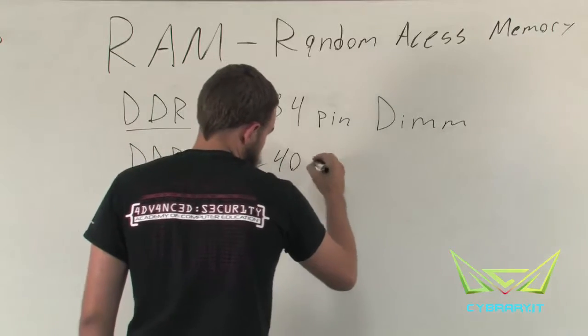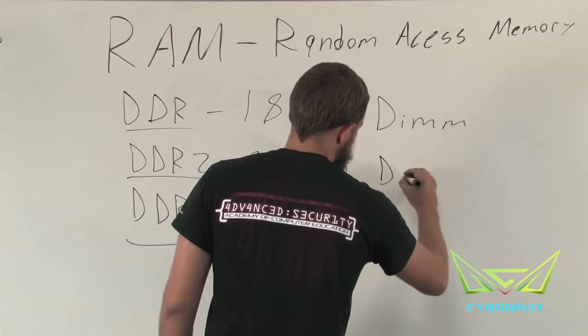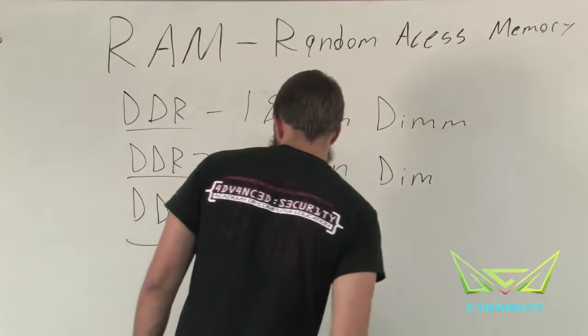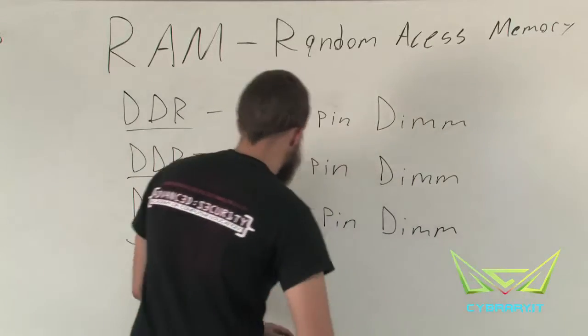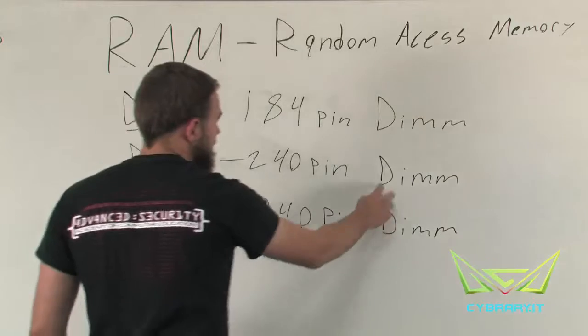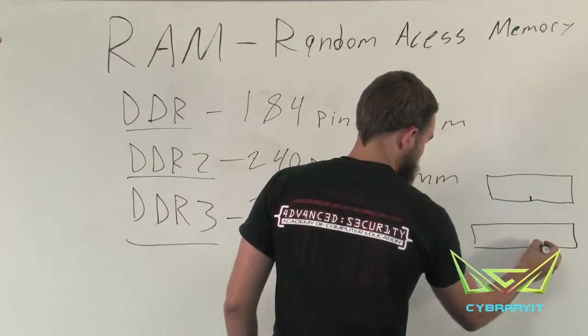DDR2 memory is actually a 240-pin connector, and it's also DIMM. And DDR3 is also 240, but the notch that's in the memory module is in a different place.